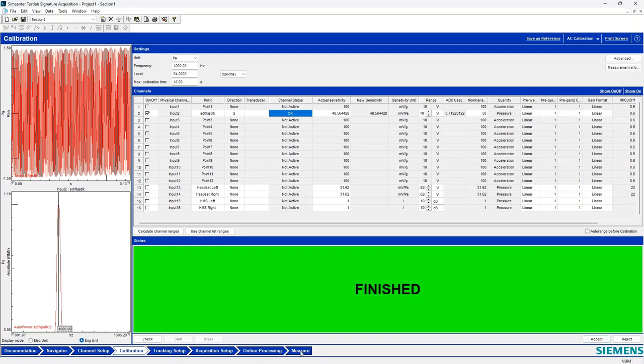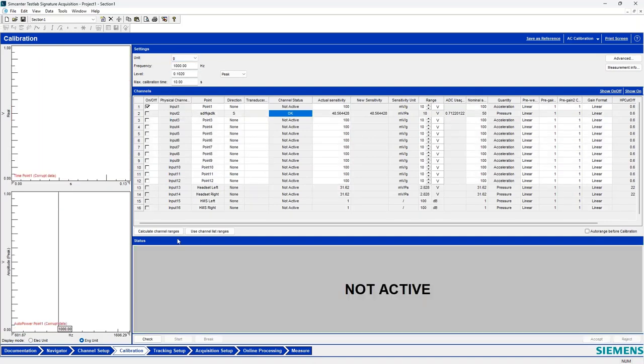So that's the calibration procedure in TestLab. If I had any accelerometers, it would be very similar, except instead of an acoustic calibrator, I'd have a vibration calibrator. And I can calibrate my accelerometers in the same manner. So that's calibration.